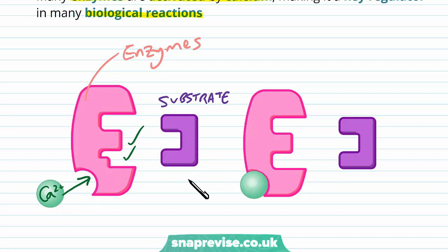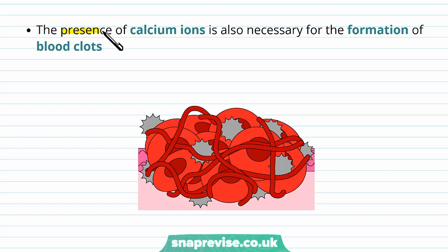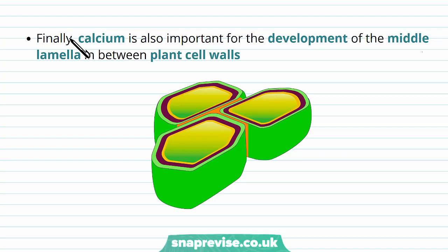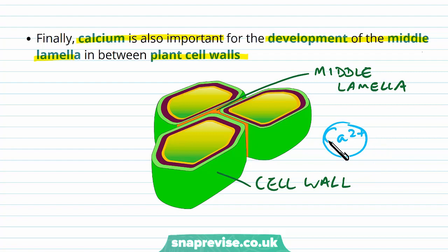Calcium has a role in the blood as well. The presence of calcium ions is necessary for the formation of blood clots. If we injure a blood vessel wall, blood starts leaking out, and in order to stop this leakage we have to form a blood clot around the damaged area, with calcium being an important component. Finally, calcium has an important role in plants — it's important for the development of the middle lamella, which lies between the plant cell walls. Without calcium, these structures would be very weak and the plant would lose its general structural integrity.